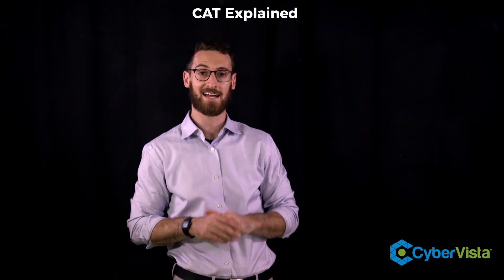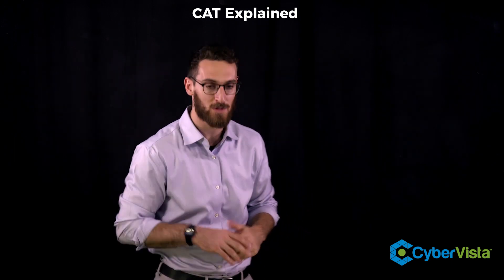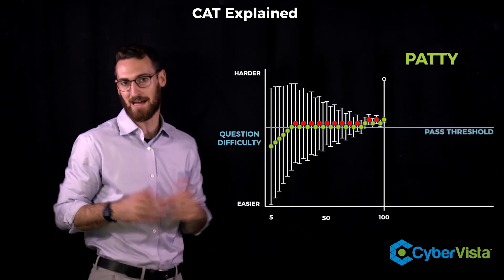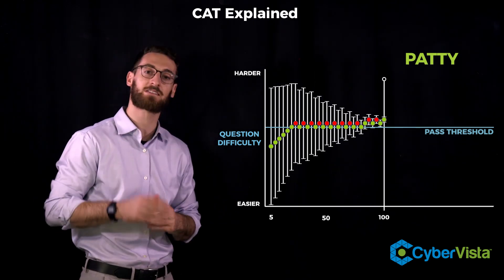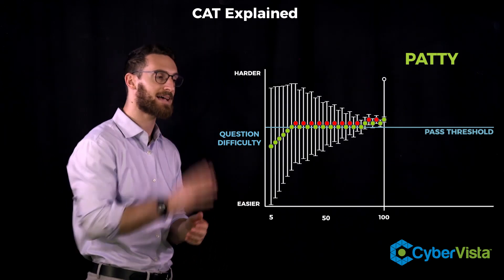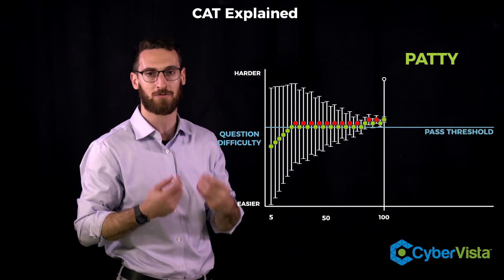Let's take a look at a CAT engine output of a real test taker who sat through CyberVista's CISSP CAT final. So we'll call this test taker Patty because Patty is a passer. So for Patty, she studied a lot, so she did well at the beginning of the test. And you can see the test ends at question 100 for Patty.